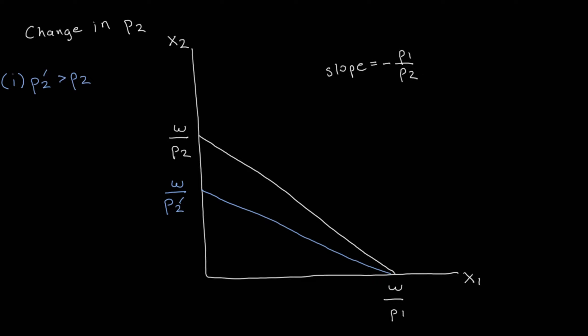Next, consider the case where the price of good two decreases to P2 double prime, which is less than the original price P2. If the price decreases, the vertical intercept should be higher than before. This makes sense intuitively because the budget set is expanding — the consumer can afford more of good two, so more bundles are possible to purchase. This results in a clockwise rotation of the budget line, and the slope becomes steeper because P2 is in the denominator.